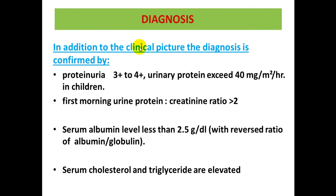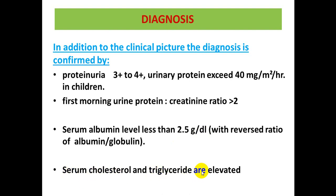Regarding diagnosis: in addition to the clinical picture, diagnosis is confirmed by proteinuria of 3+ or 4+ on urine dipstick, urinary protein excretion of more than 40 mg per square meter per hour, and a first morning urine protein-to-creatinine ratio of more than 2. Serum albumin level is less than 2.5 g per deciliter, indicating hypoalbuminemia. Serum cholesterol and triglycerides are elevated, indicating hyperlipidemia.